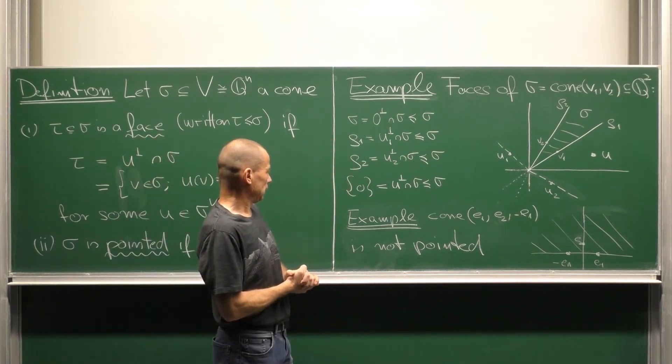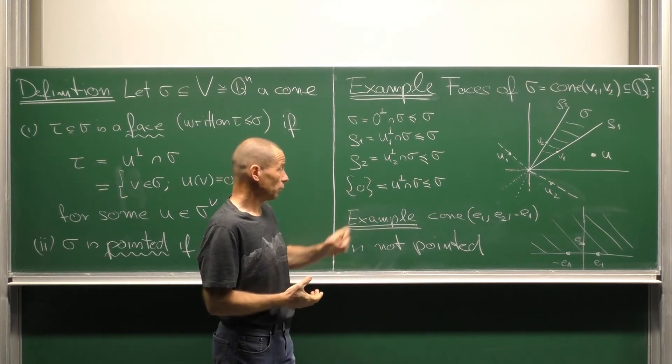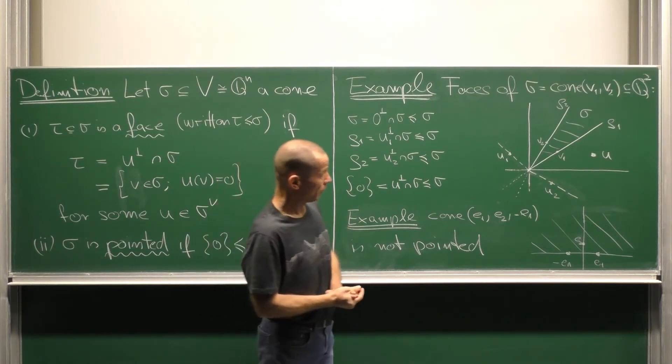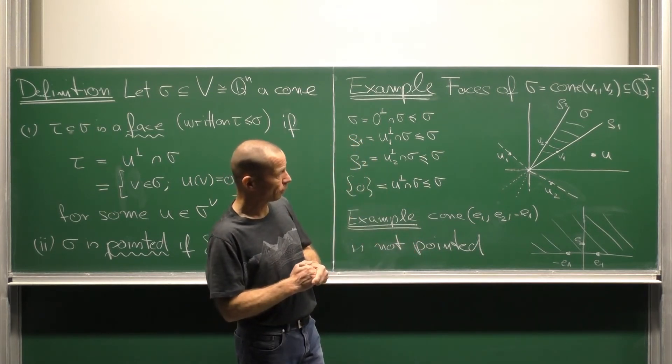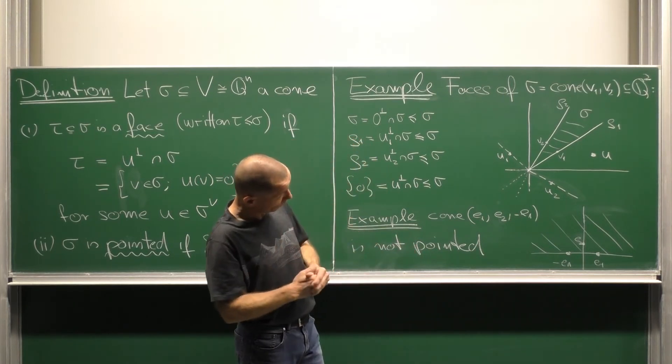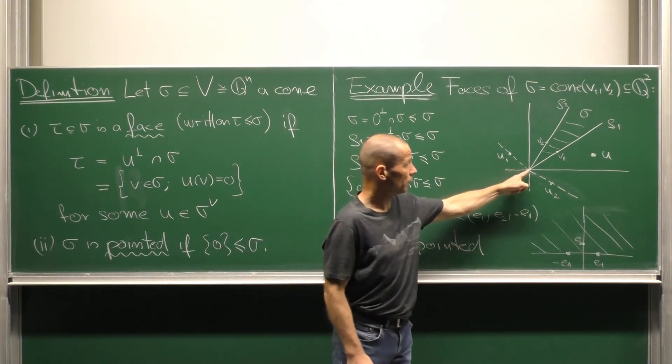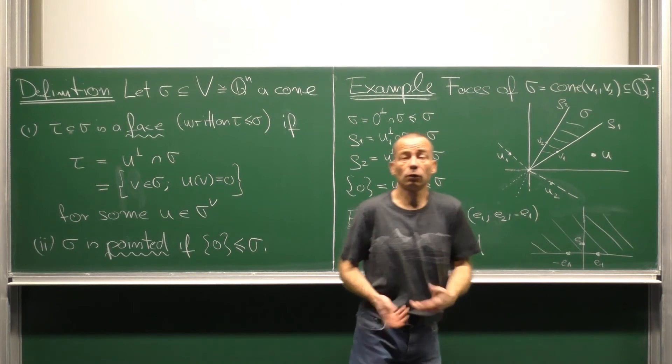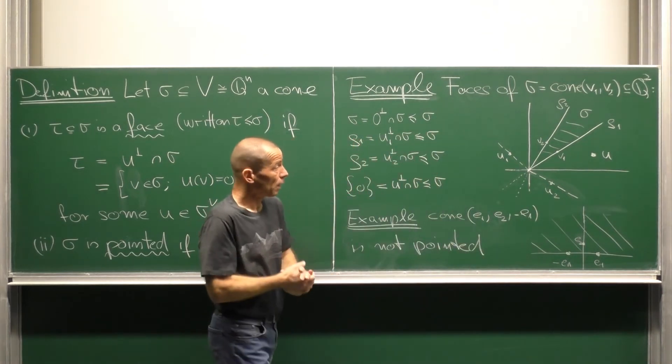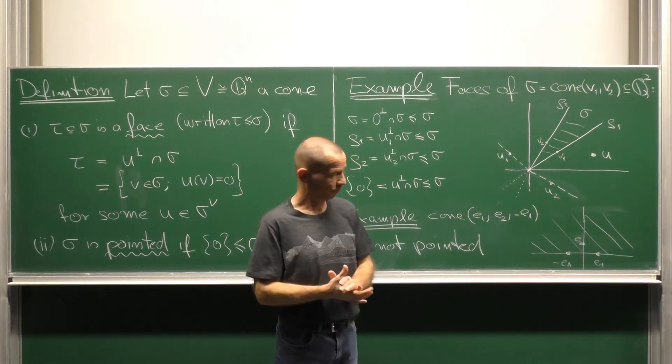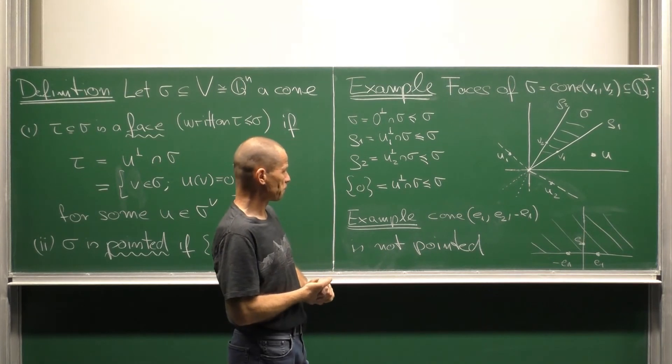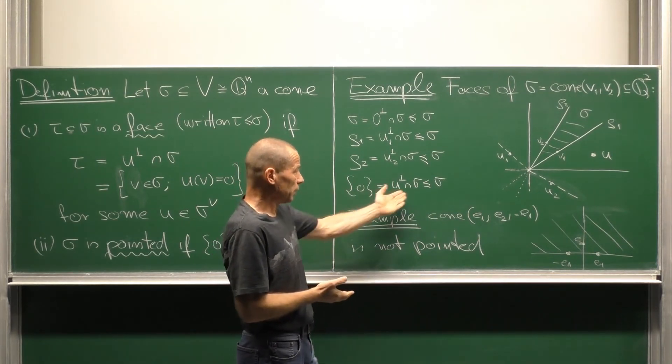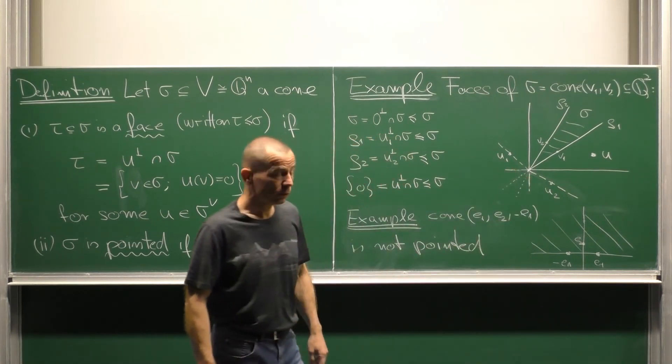And the zero cone in this case is also a face of sigma. We need a describing linear form standing from the interior which is non-negative on the whole sigma but vanishes only in the point zero. So we can take any general element of the dual cone. So in particular, our sigma is a pointed cone.